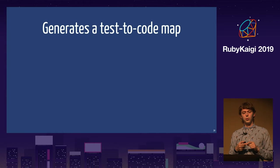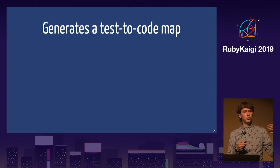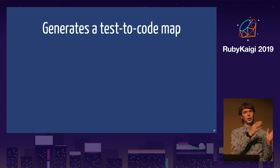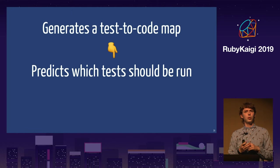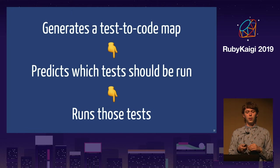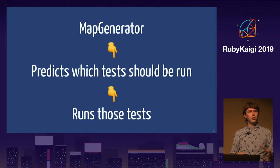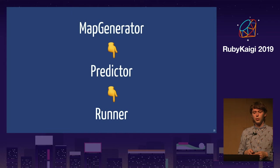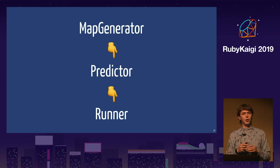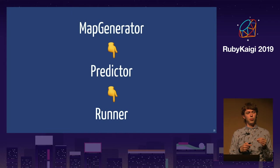So let's dive a bit more into it. Crystal Ball has three parts. The first one is the layer that generates a map from test to code — which test uses which code. Then, based on that map, Crystal Ball predicts which tests should be run based on the changes in the Git repository. And finally, it runs the tests. The first layer is called Map Generator, the second is Predictor, and the last one is Runner.